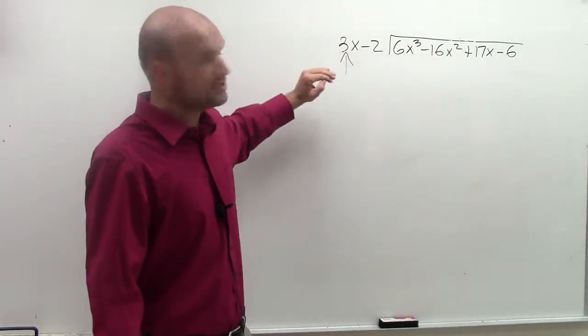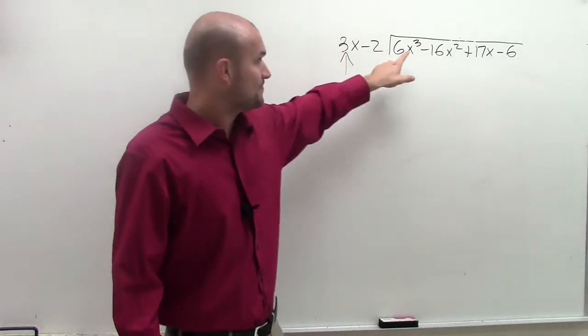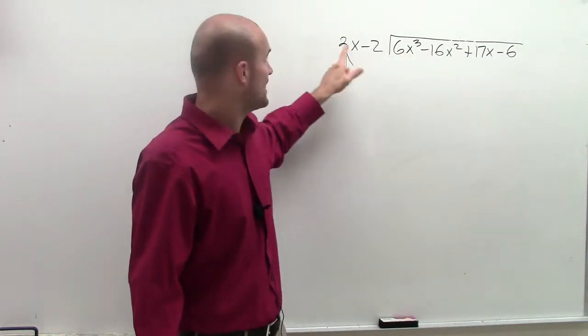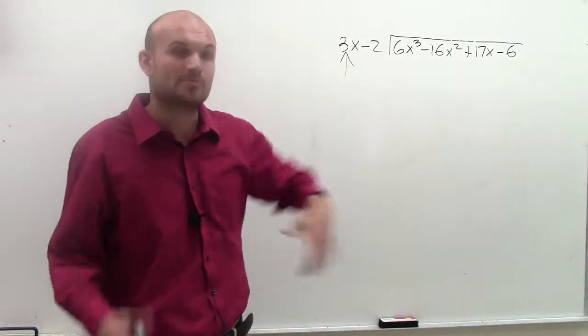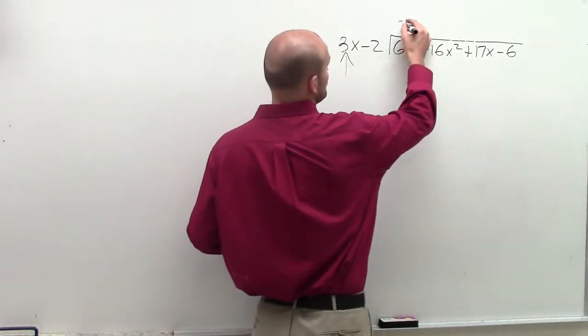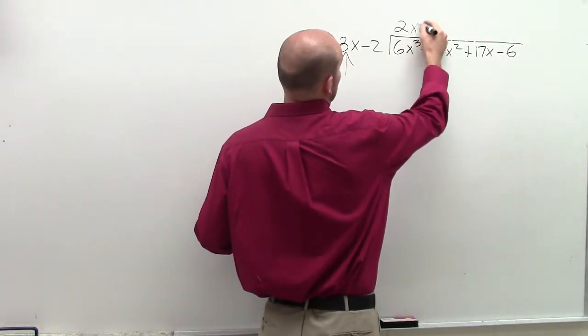So what I'm first going to do is take the first term of my polynomial and divide only. So I have 3x divides into 6x cubed, and that divides in there 2x squared times.